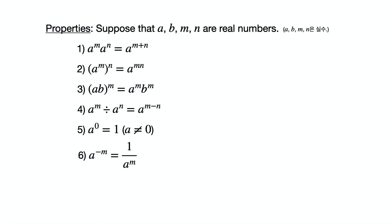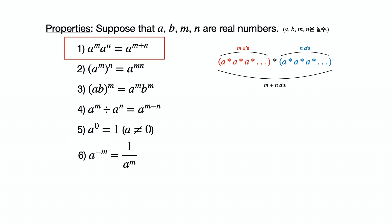There are various properties of exponents you must know. Property 1: a to the m power times a to the n power equals a to the m plus n power. This is because if you multiply m multiples of a and n multiples of a, then you get m plus n multiples of a.